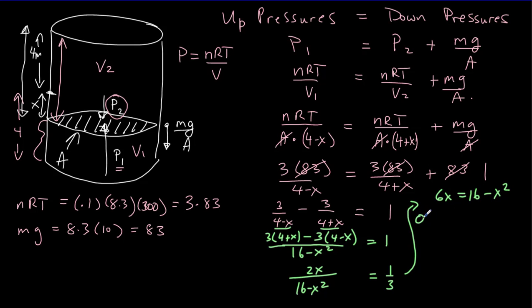So as a quadratic, 0 must be equal to x squared plus 6x minus 16. That factors into x plus 8 and x minus 2. So x is either equal to negative 8, not possible, or x is equal to 2. That's going to be our answer.